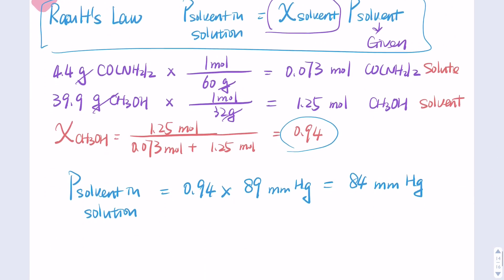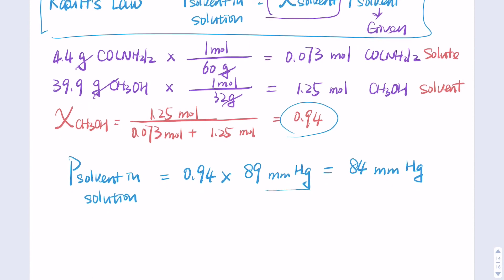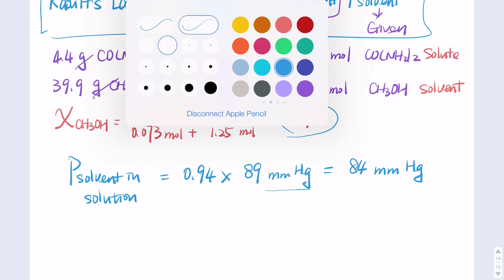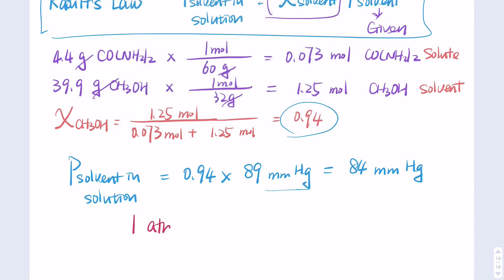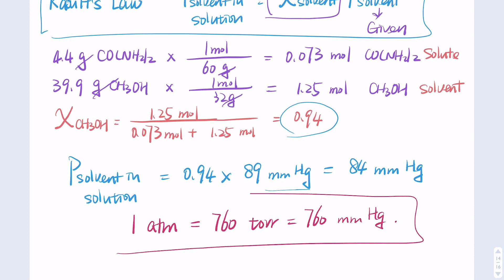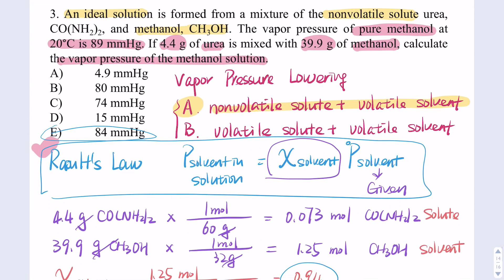One more note: if the question gives you the pure solvent vapor pressure in mmHg but asks for the answer in atm, you need to convert. The conversion factor: 1 atm equals 760 torr, which equals 760 mmHg. These are the three pressure units you need to know, and they are not given during the exam. That's it for today's video on vapor pressure lowering — case A, non-volatile solute plus volatile solvent. Thank you for listening.